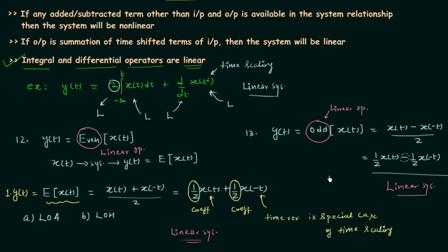In this lecture we have obtained our sixth property: even and odd operators are linear operators. Like integral and differential operators, even and odd operators are also linear. That is all for this lecture — see you in the next one.